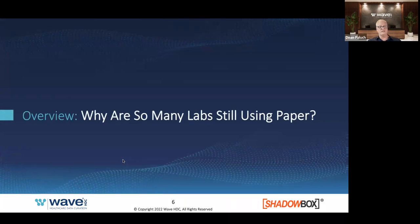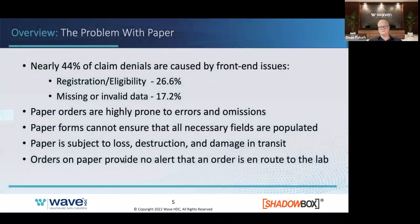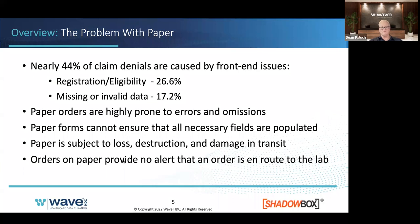According to the largest claims clearinghouse in the US, 44% of claim rejections are due to registration errors and missing or invalid data. Transactions processed on paper or old technology are highly prone to errors and omissions. Paper forms cannot ensure all necessary information is populated. Paper is subject to loss, destruction, or damage in transit, and provides no alert that a requisition is on route to the laboratory. Old EMR integrations have required data fields but cannot validate coverage and demographic information.